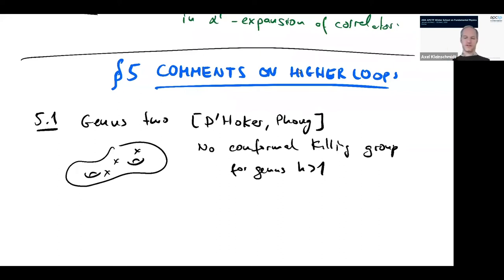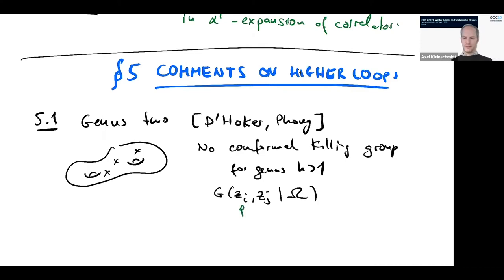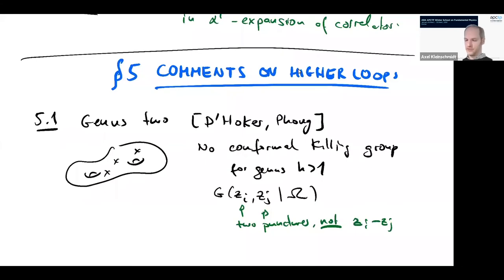On the torus we still had translation invariance to fix some of the punctures; when you go to higher genus you don't have anything like that at your disposal. This means the Green's function will now depend on the different punctures separately — it's not translation invariant. It depends on the position of the two punctures, and it's not simply z_i minus z_j, because that is not a well-defined concept on a higher genus Riemann surface. The representation that has turned out to be most useful recently is known as the Arakelov Green's function.